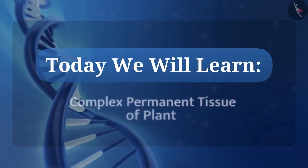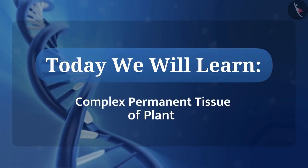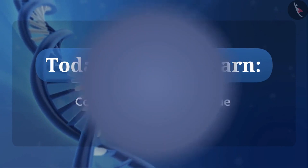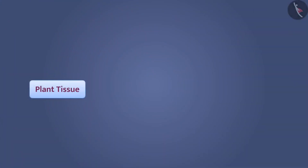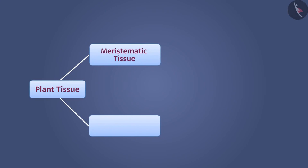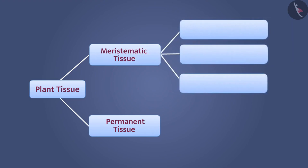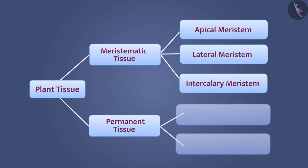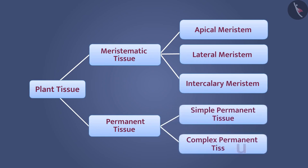Today we will learn about the complex permanent tissue of the plant. In plants, there are mainly two types of tissues: meristematic tissue and permanent tissue. We know that meristematic tissue is of three types: apical meristem, lateral meristem, and intercalary meristem. Similarly, permanent tissues are of two types: simple permanent tissue and complex permanent tissue.